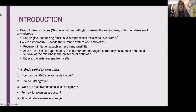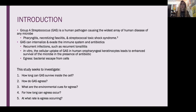Group A strep is a human pathogen that causes the widest array of human disease of any microbe. This can be things as minor as pharyngitis, or you might know it as strep throat, to necrotizing fasciitis, which you may know as flesh-eating disease, and streptococcal toxic shock syndrome. On average, group A strep takes about 500,000 lives every year. Group A strep can internalize in human cells and evade the immune system and evade killing by antibiotics. Recurrent infections may be explained by this, as many people suffer from recurrent tonsillitis or getting strep throat over and over again.